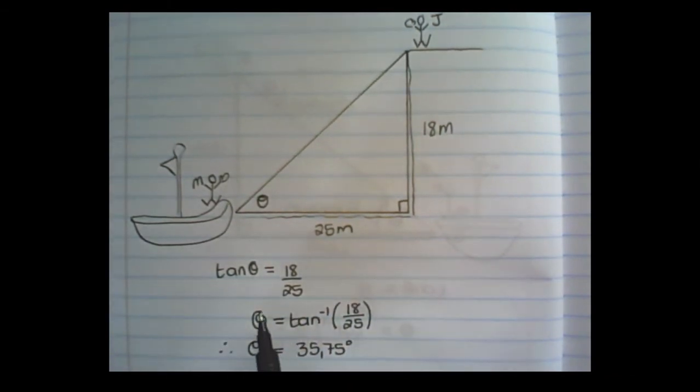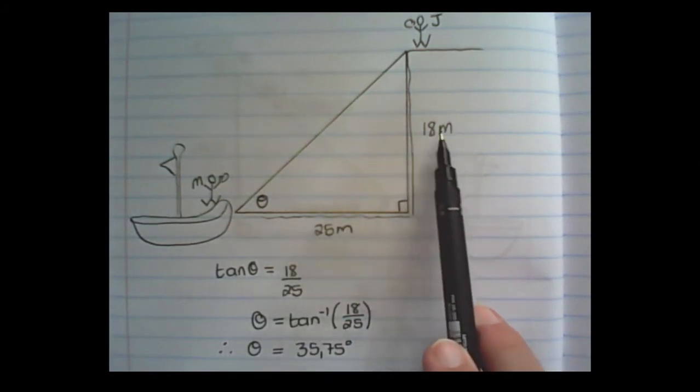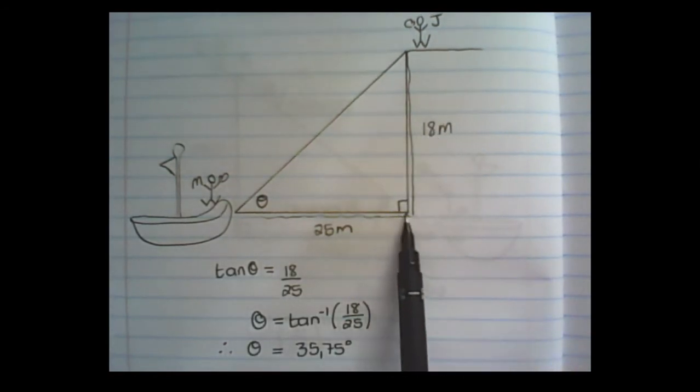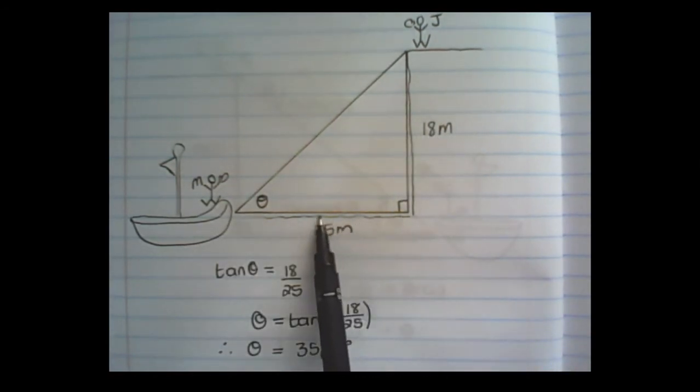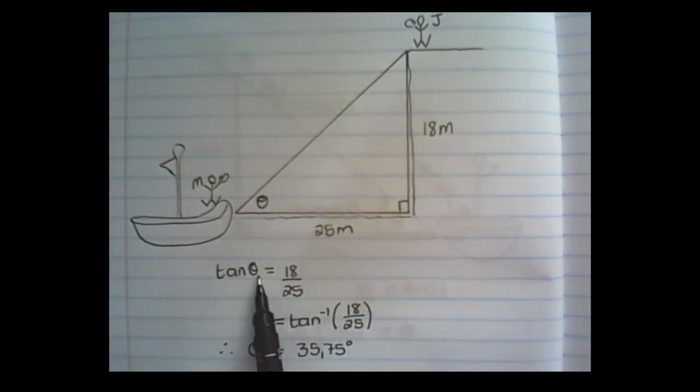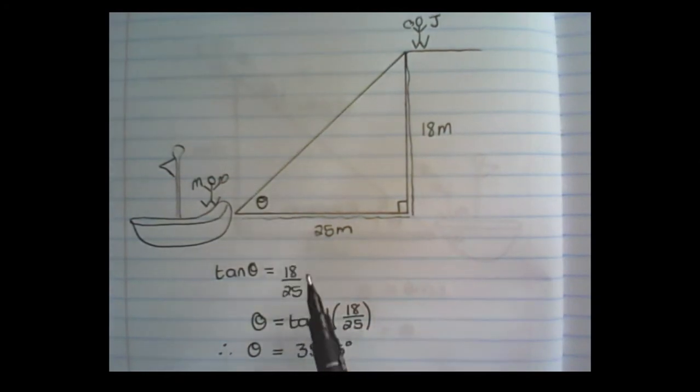So if I substitute the values of the lengths of the cliff and the distance from the boat to the cliff I then have a ratio for tan theta. Thereafter I take the inverse function of theta on my calculator, I plug in those values and I find that this angle is 35.75 degrees.